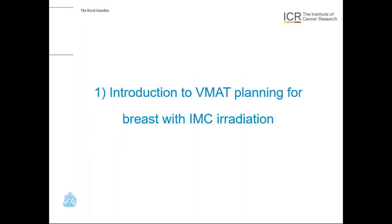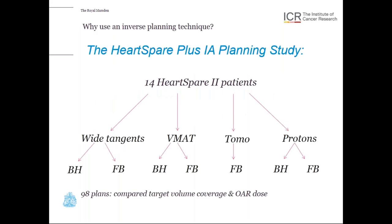As an introduction to VMAT planning for breast with IMC irradiation: Alison has already discussed the Heart Spare Plus 1A planning study in this webinar. Briefly, it consisted of scanning patients in both breath hold (BH) and free breathing, and we generated wide tangent plans, VMAT plans, tomotherapy plans, and proton plans for these patients. We ended up with 98 plans in total and compared their target volume coverage and organ-at-risk dose.